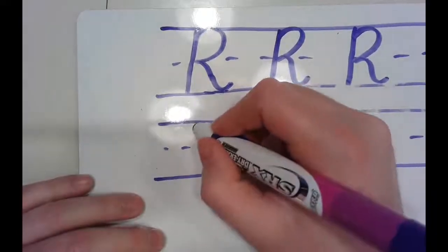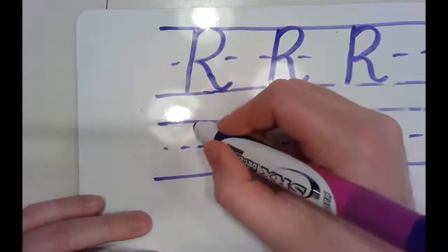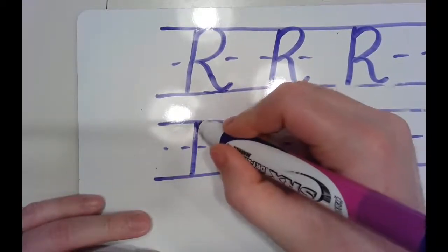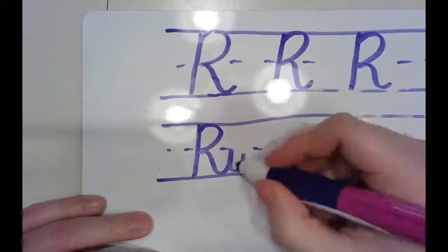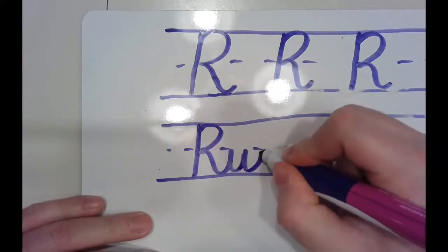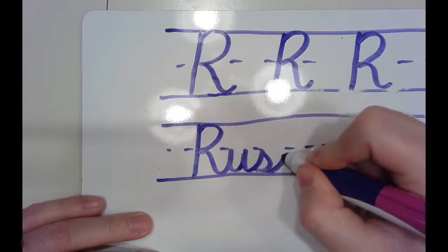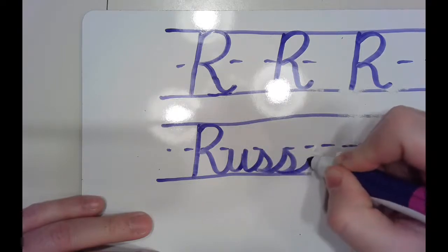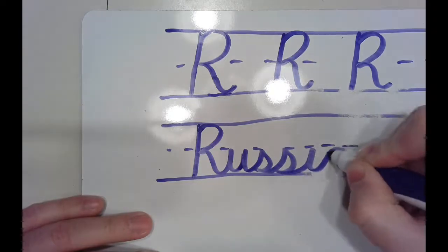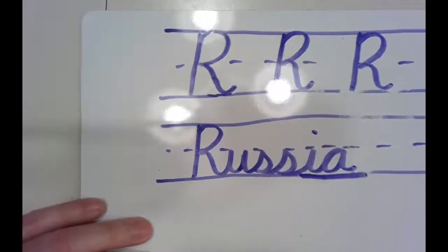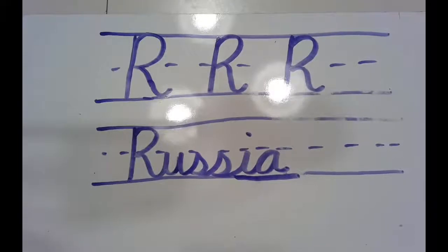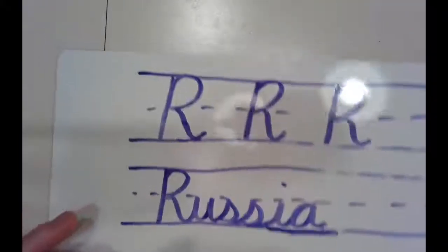Here we're going to write the country, large country Russia. With our R, it's going to connect to the U, which connects to our S's, one, two S's, I, and A. Russia. All right, do what you need to if you're bored practicing, and we'll go to our last page together, 26.